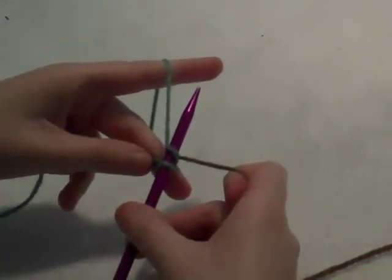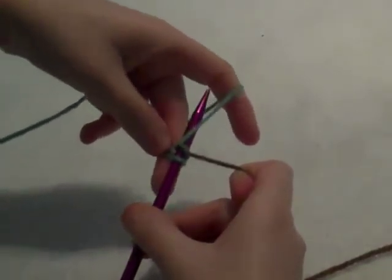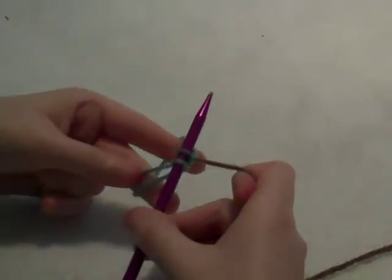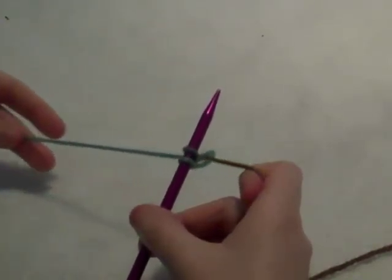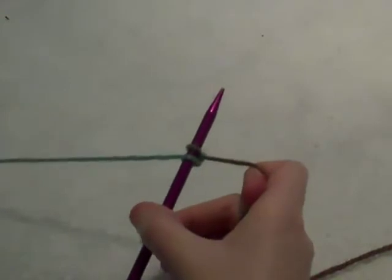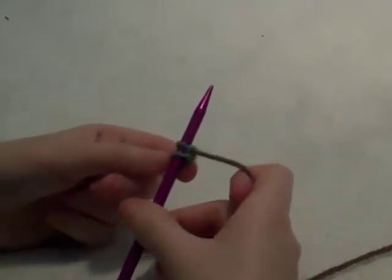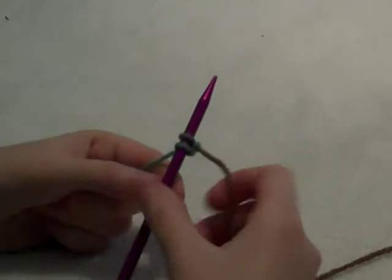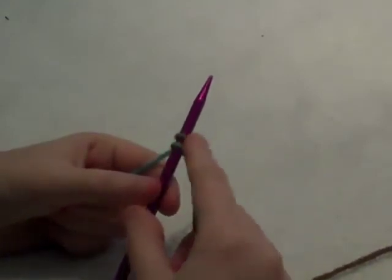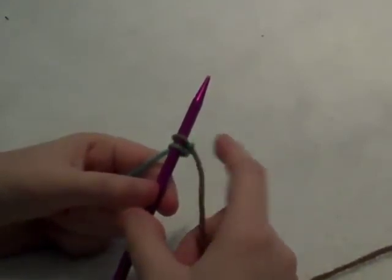Then with your tail again, you're going to take it back over the needle so it was the reverse of what you had just done and pull it tight. Now you have two stitches on your needle, the original slip knot and the one that you just did from casting on.